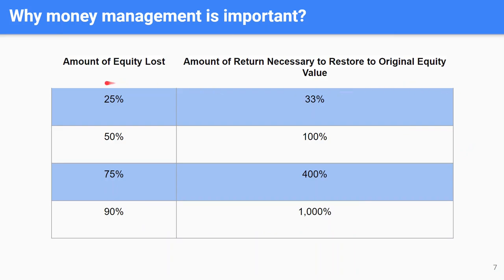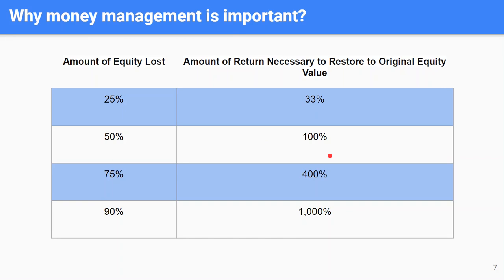In this table, in the first column you can see the amount of equity lost, and in the second column it shows the amount of return necessary to restore to original equity value. This table better shows the importance of money management — for example, if a trader loses 50% of their capital, the trader must double their account just to bring it back to its original equity.